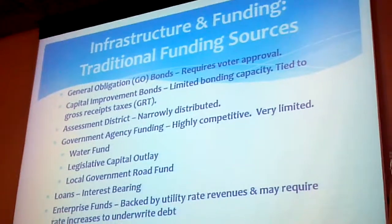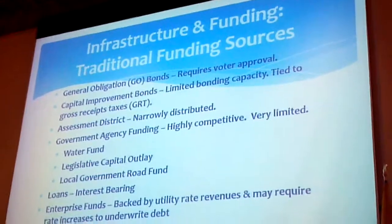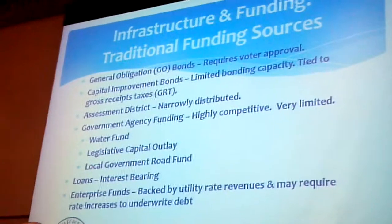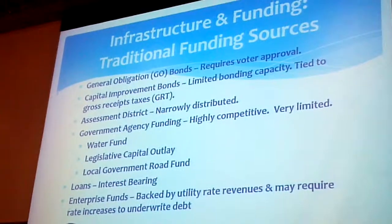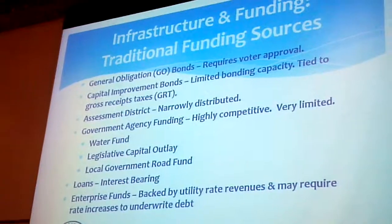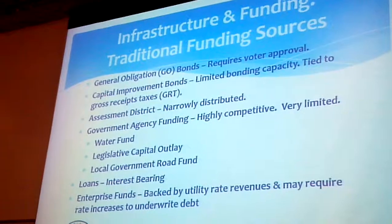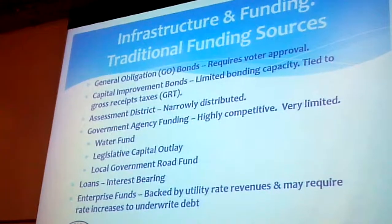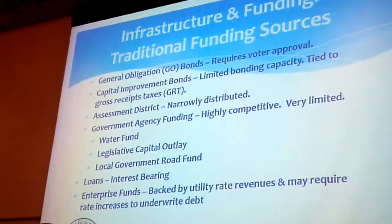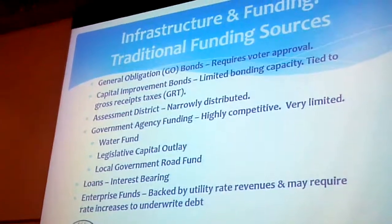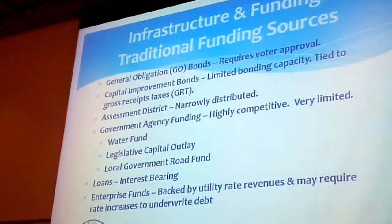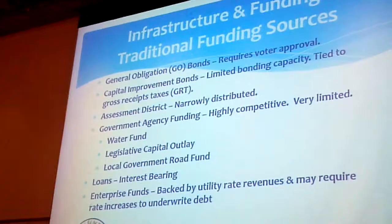What are some of the traditional funding mechanisms? We have general obligation bonds — they require voter approval, an extensive campaign, quite a bit of public buy-in. Capital improvement bonds always have a limitation on bonding capacity, because it's usually backed by gross receipts taxes. We have assessment districts, which are basically localized taxes for localized improvements.